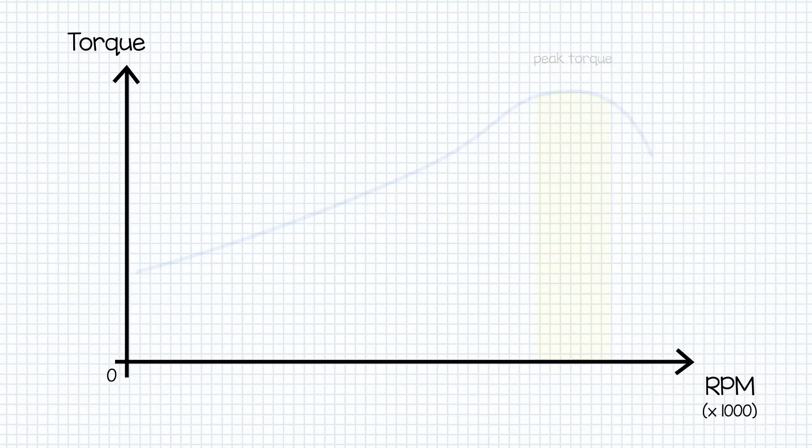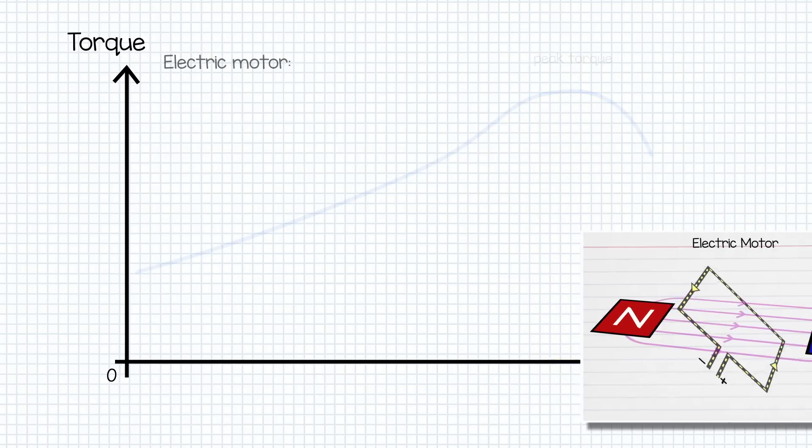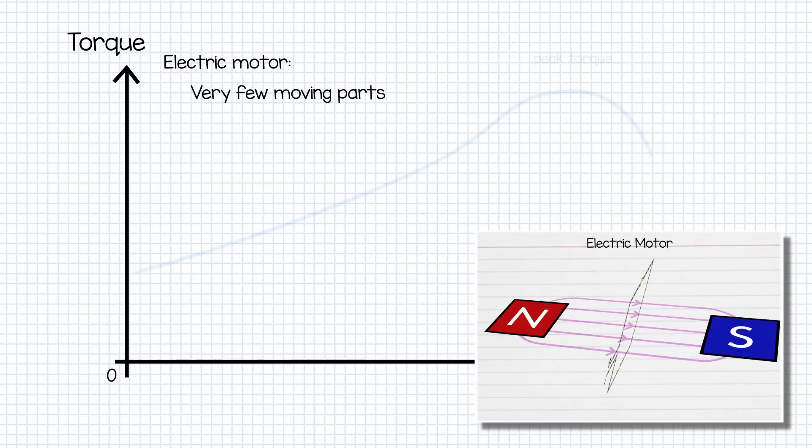An electric motor has a very different torque curve. Unlike the combustion engine, it has very few mechanical parts and it doesn't rely on the flow of fuel and air. In fact, we know from our previous video on the MGU-K that it's just a rotor spinning in a magnetic field. Very simple.